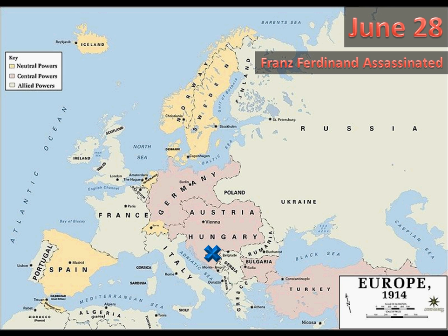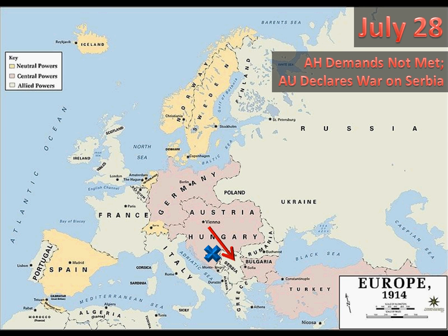If the heir apparent of your throne were to be assassinated, you would be quite upset and would issue demands and ultimatums to the perpetrators of the crime. And in fact, that's exactly what Austria-Hungary did. However, Serbia did not meet these demands, and so a month later, on July 28, Austria-Hungary declared war on Serbia.